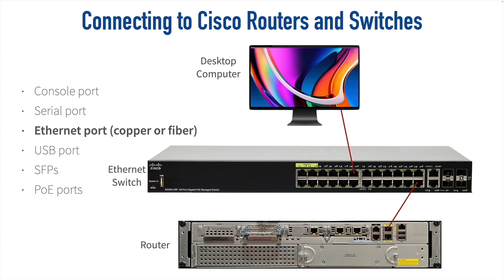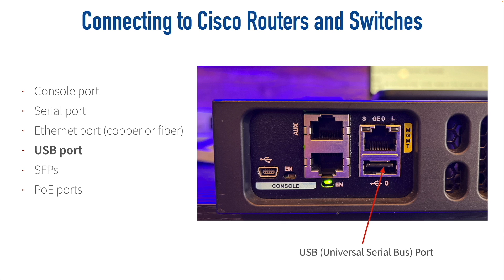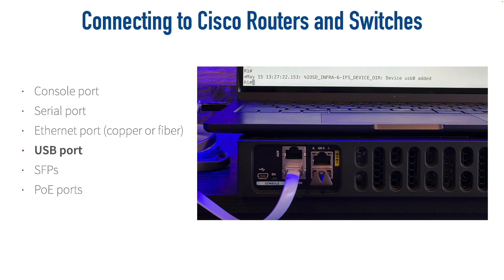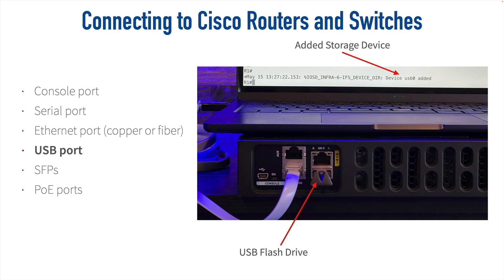Another type of port we might see is a USB port — Universal Serial Bus. You might have used a USB flash drive before to copy data to or from a computer, and many modern routers and switches have a USB port. We can plug in a USB flash drive, as shown here, to give us additional storage. We might want to put a copy of a Cisco IOS on there, some backup files, or transfer data to or from the router or switch. After plugging in a USB flash drive, a message appeared on the console indicating a new device was added and files can be copied to and from it.